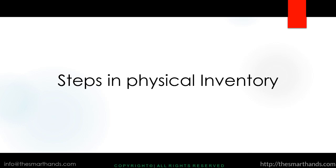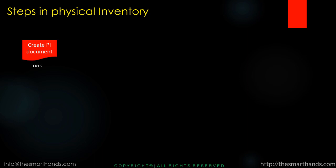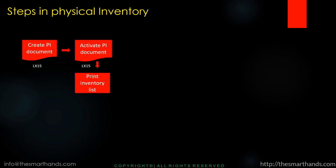Now we'll discuss the steps in the physical inventory process — what are the different steps from an SAP point of view to complete the inventory process. In SAP WM, the first step is to create a PI document (PI stands for Physical Inventory document) using transaction LX15. The second step is also LX15 — that transaction is used to activate the same PI document. Then we print the inventory list using transaction LI04, and give the printout to the warehouse person who will go and physically count the goods.